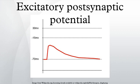These are the opposite of inhibitory postsynaptic potentials, which usually result from the flow of negative ions into the cell or positive ions out of the cell. EPSPs can also result from a decrease in outgoing positive charges, while IPSPs are sometimes caused by an increase in positive charge outflow.